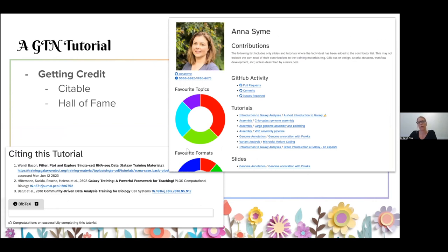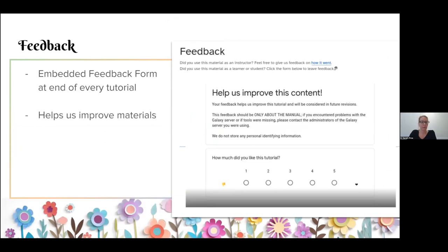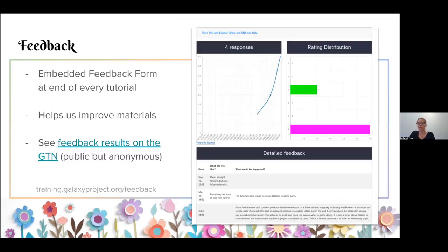Every contributor also gets their own page on the Hall of Fame, where you can list everything you've worked on — so it's not just invisible work. Every tutorial, slide deck, or anything you've contributed to shows up there. Users can also provide feedback through a small feedback form embedded at the end of every tutorial, and users fill this in a lot, which really helps us improve materials. The anonymous responses are made available from the GTN, so if you provide a tutorial here you can also see what people think about it. Sometimes we get really good suggestions from learners.